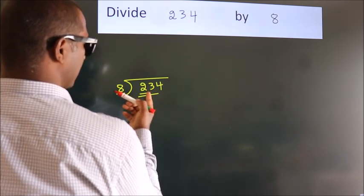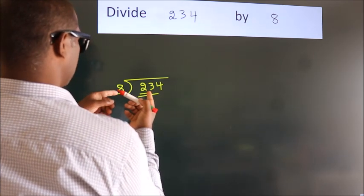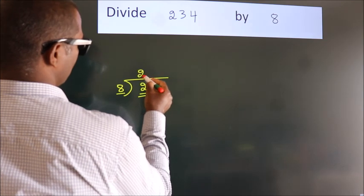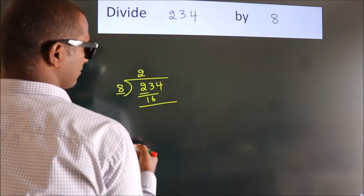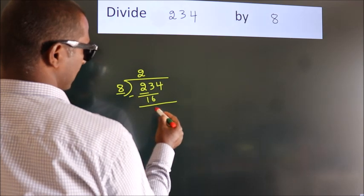A number close to 23 in the 8 table is 8 twos, 16. Now we should subtract. We get 7.